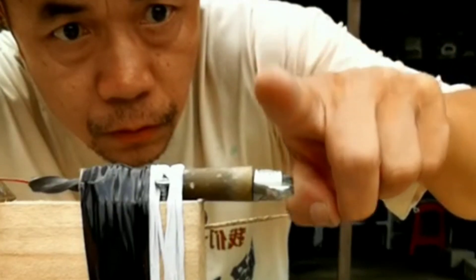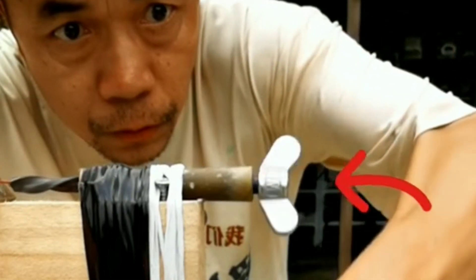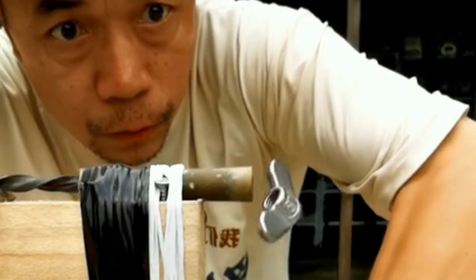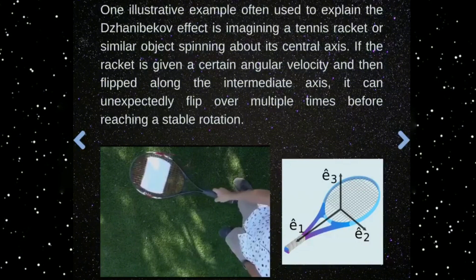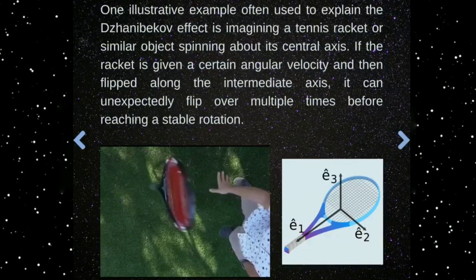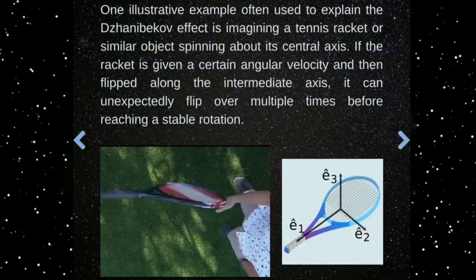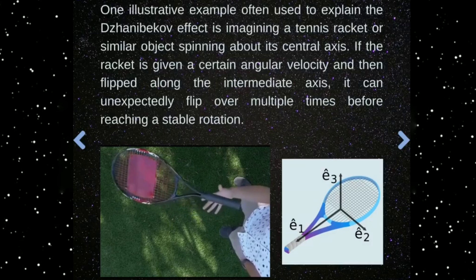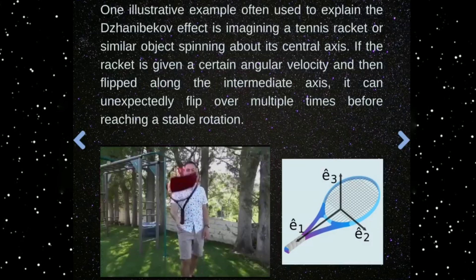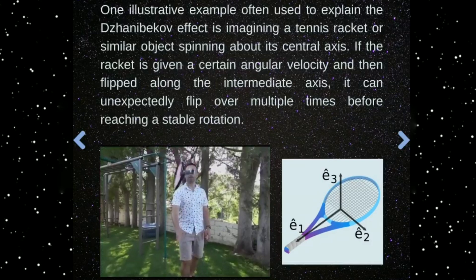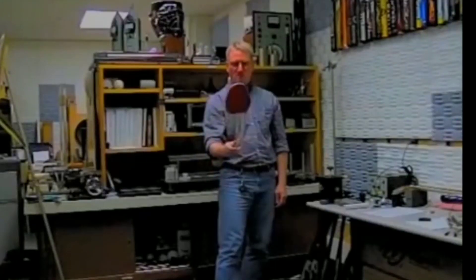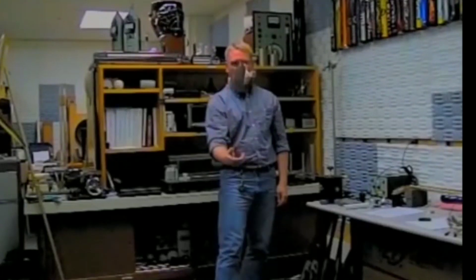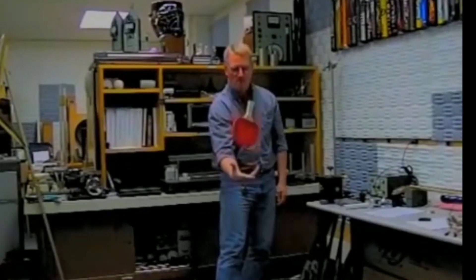The Janibekov effect, though fascinating on a cosmic scale, can actually be observed with simple everyday objects. One classic example is the tennis racket theorem. If you take a tennis racket and try to spin it in the air around different axes, you'll notice that spinning it around the longest or shortest axes results in smooth, stable rotations. However, if you spin it around its intermediate axis — the second principal axis — the racket will flip unexpectedly during the rotation, just like in the Janibekov effect.